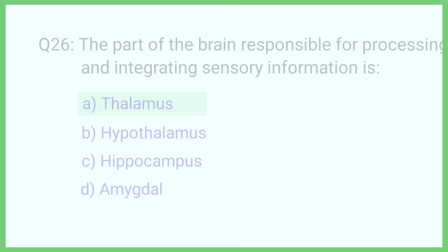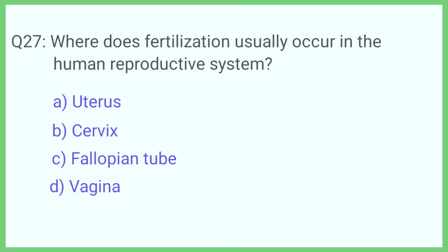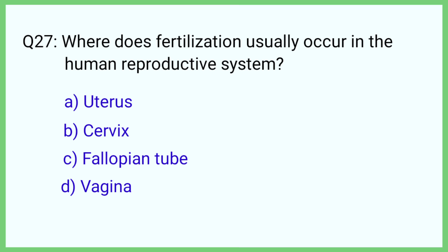Question number 27. Where does fertilization usually occur in the human reproductive system? The correct answer is option C: Fallopian tube.